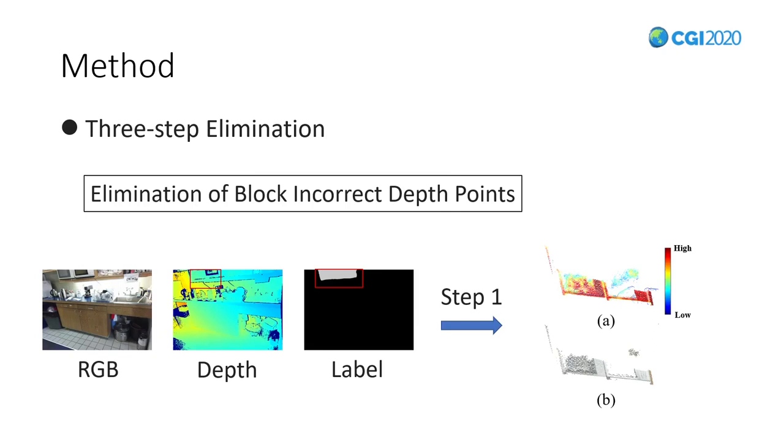Here is the first step, elimination of block incorrect depth point. The red box indicates the potential error depth area, and the corresponding point cloud is shown in figure A. Here we give a removal weight to each point for the first step. In this figure, blue indicates lower weight, and red indicates higher weight. Lower weight often means that the point may be wrong, and we should remove it.